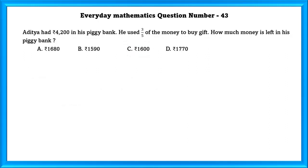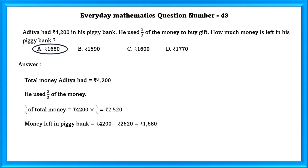Every day mathematics question number 43. Aditya had 4,200 rupees in his piggy bank. He used 3 by 5 of the money to buy gifts. How much money is left in his piggy bank? Total money Aditya had is equal to 4,200. He used 3 by 5 of the money. 3 by 5 of the total money is equal to 2,520. And money left in the piggy bank is equal to 1,680.